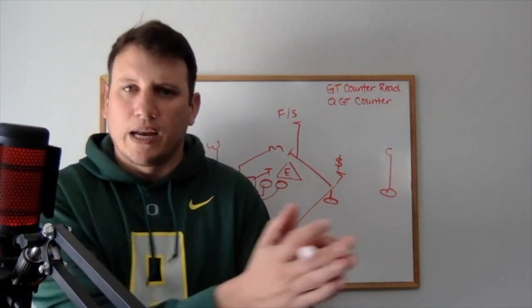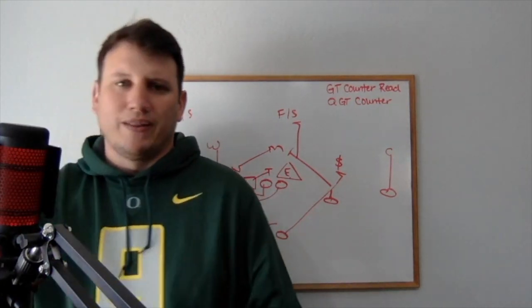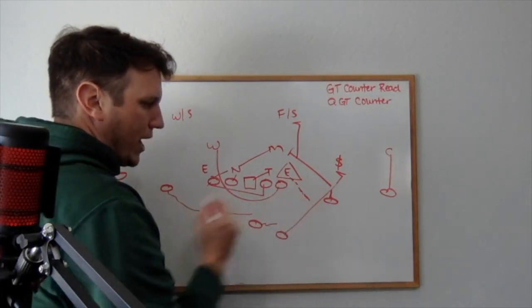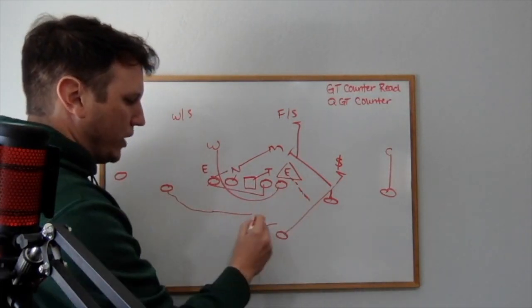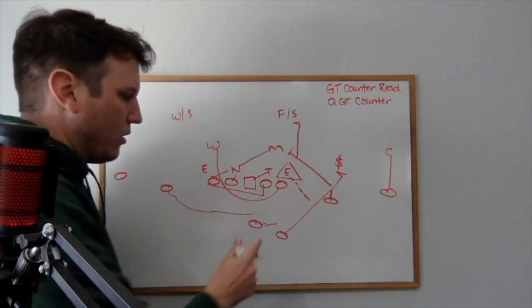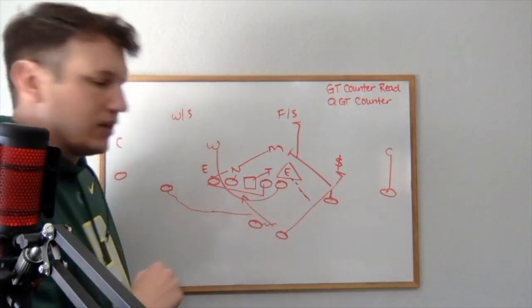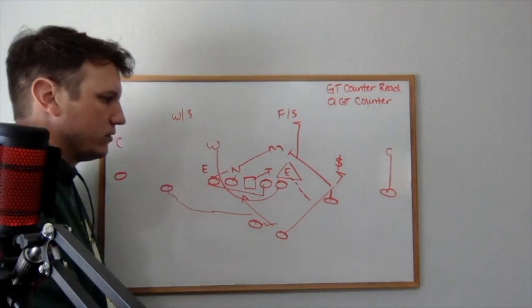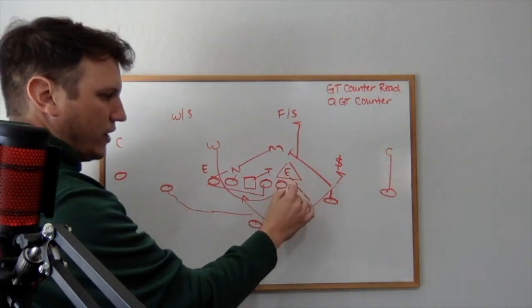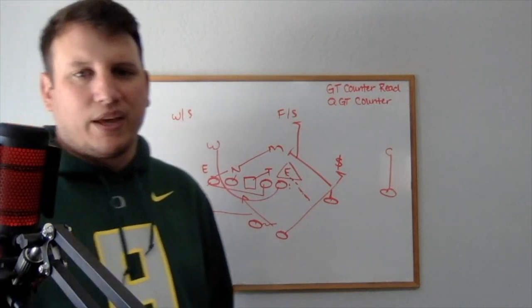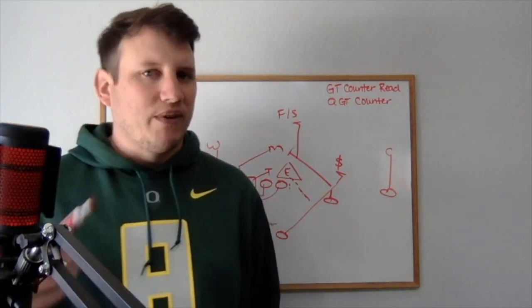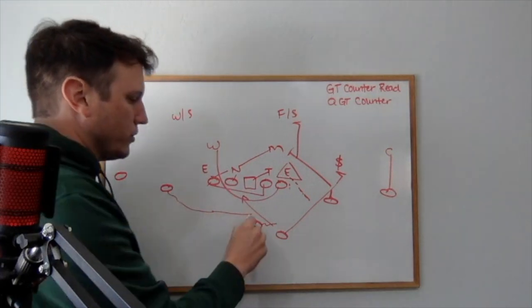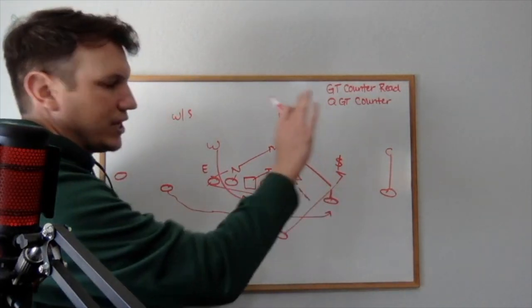The quarterback rides the mesh point and makes a decision by the time the ball gets to his right leg — riding and deciding while reading that defensive end. If the defensive end gets upfield or plays wide with the jet sweep, we rip the ball out and run quarterback counter tray back to the left. If the quarterback thinks we have the edge out-leveraged, he gives it to the receiver running jet sweep to the right.